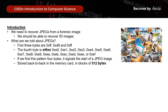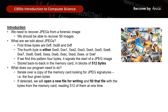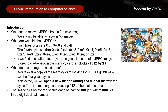These are all stored back to back in the memory card in blocks of 512 bytes. Knowing all these, what does our program need to do? We need to iterate over a copy of the memory card looking for JPEG signatures — those 4 bytes we've just discussed. If we detect these 4 bytes, we will open a file for writing and fill that file with bytes from the memory card, reading 512 bytes at a time. As you can imagine, if there are 50 images, we should open 50 new files to write each image into.